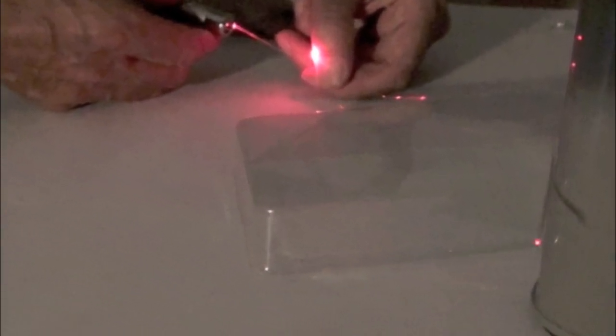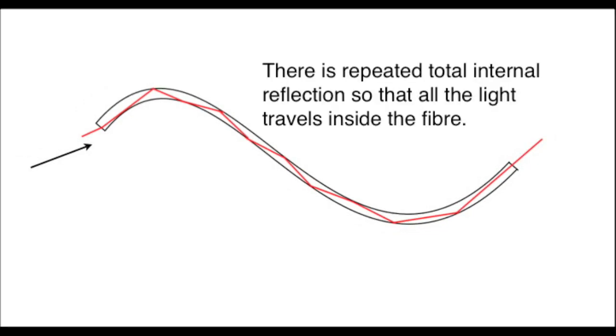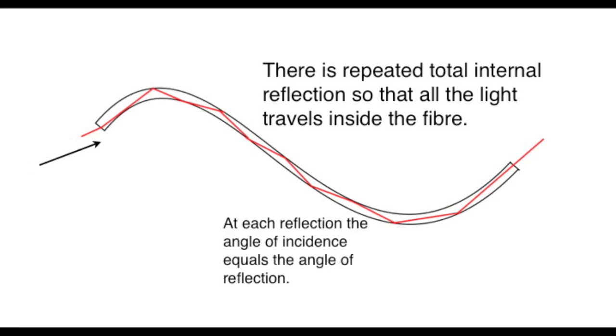In order to pass from one end to the other, the light undergoes multiple reflections inside the fibre. Each reflection obeys the laws of reflection, and each one is total internal reflection, occurring at the interface between a dense and a less dense medium. In this example, between glass and air.